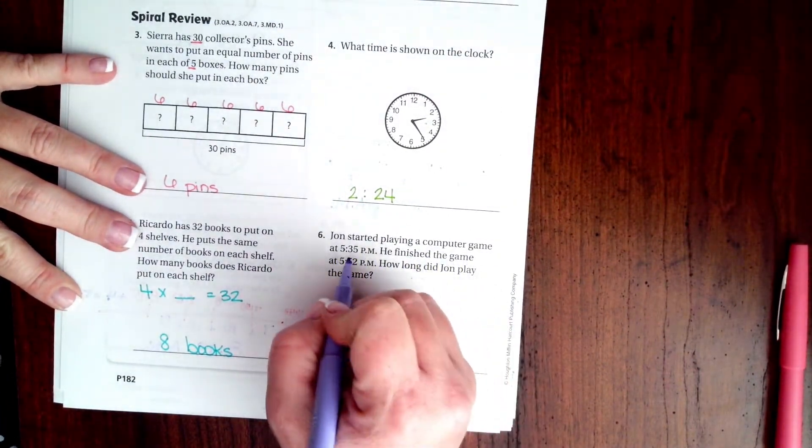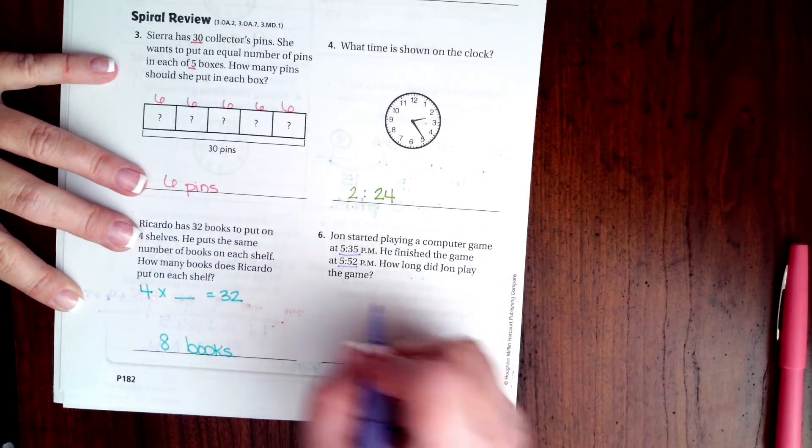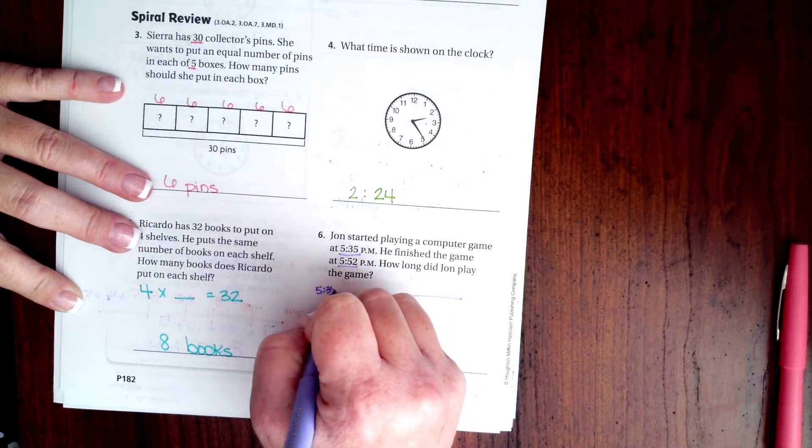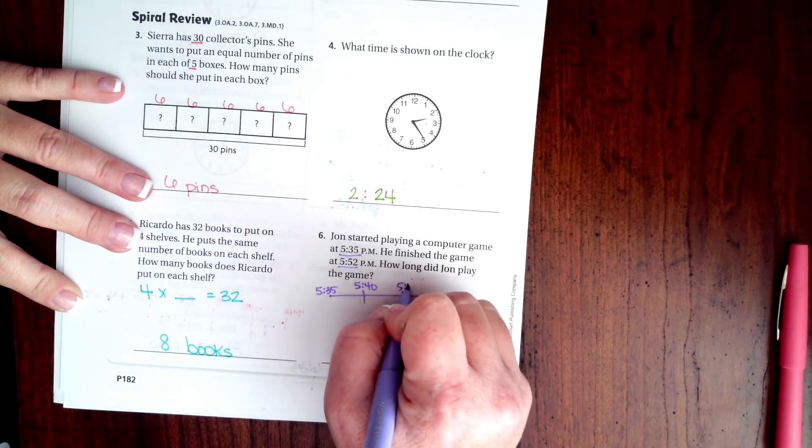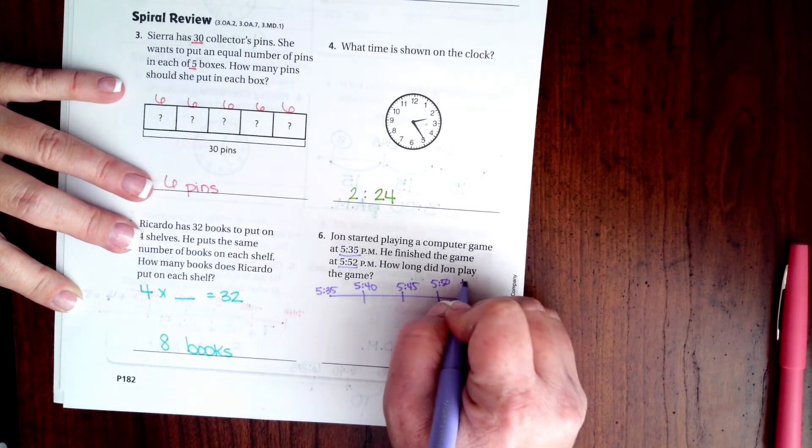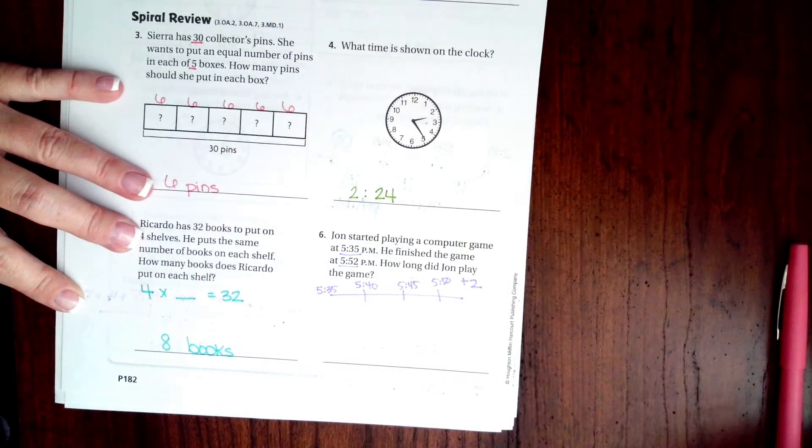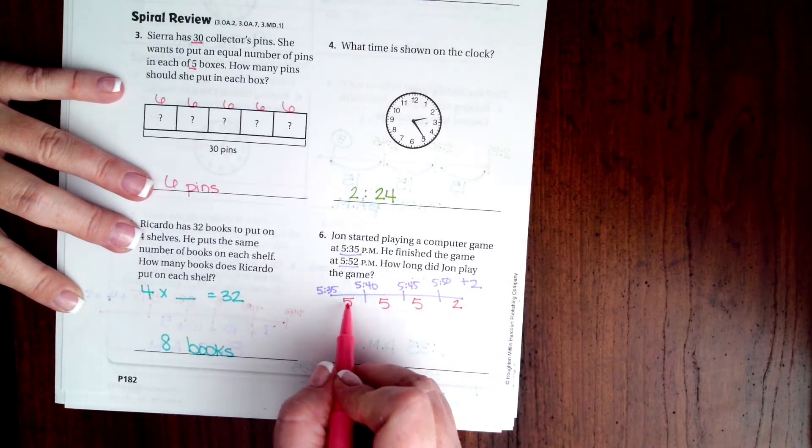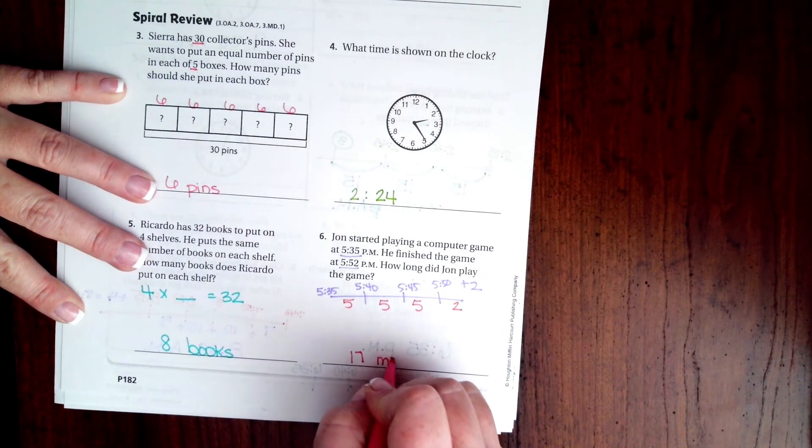John started playing a computer game at 5:35 PM. He finished the game at 5:52 PM. How long did John play? Well, let's see on our little line. We have 5:35 PM. Let's go by fives. So, 5:40 PM. 5:45 PM. 5:50 PM. And then, we're going to add two for the 5:52 PM. So, we're at 5:50 PM here plus two. So, each one of these is five up until we get there. So, 5, 10, 15, 16, 17. 17 minutes.